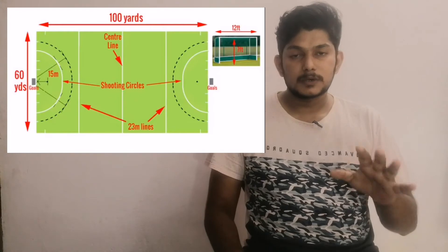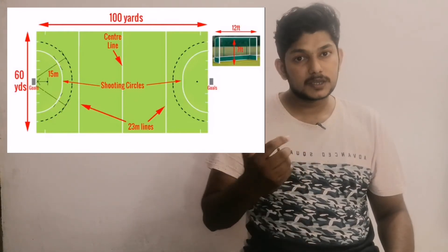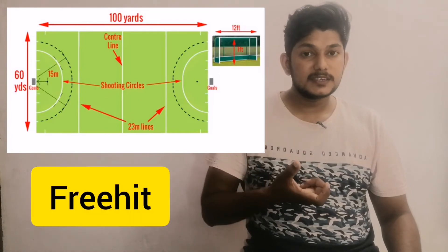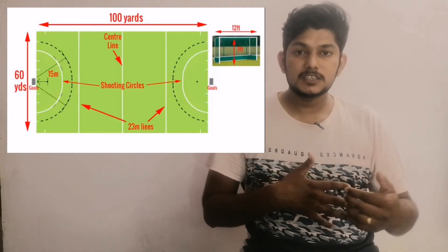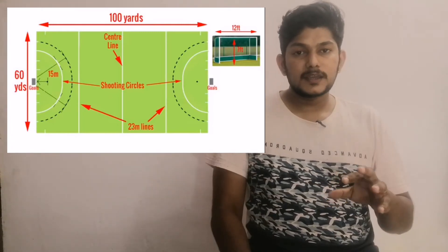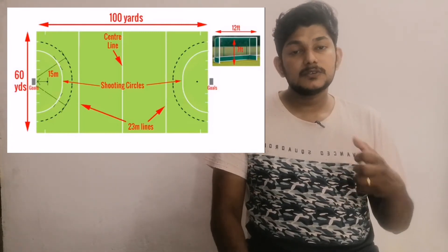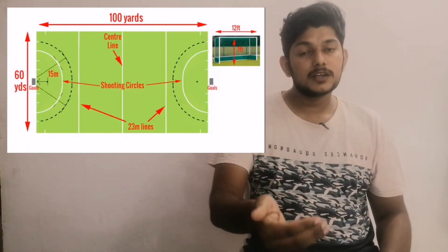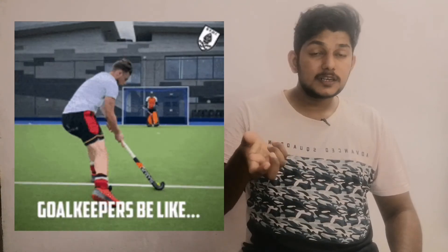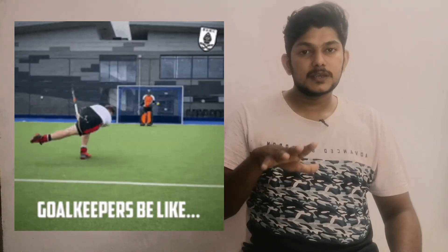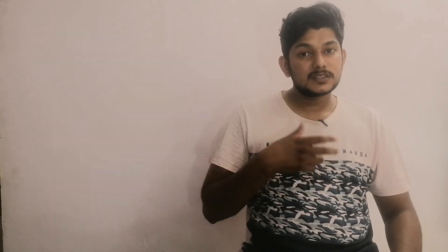Another rule is the free hit. If a foul occurs anywhere on the field outside the shooting circle, the opposing team is awarded a free hit. You are also not allowed to lift the ball freely in hockey.